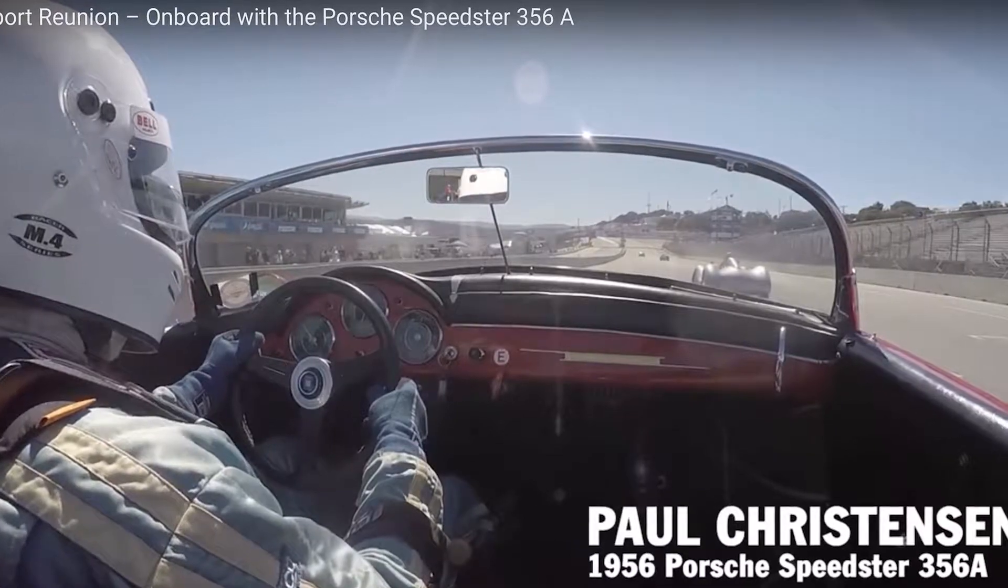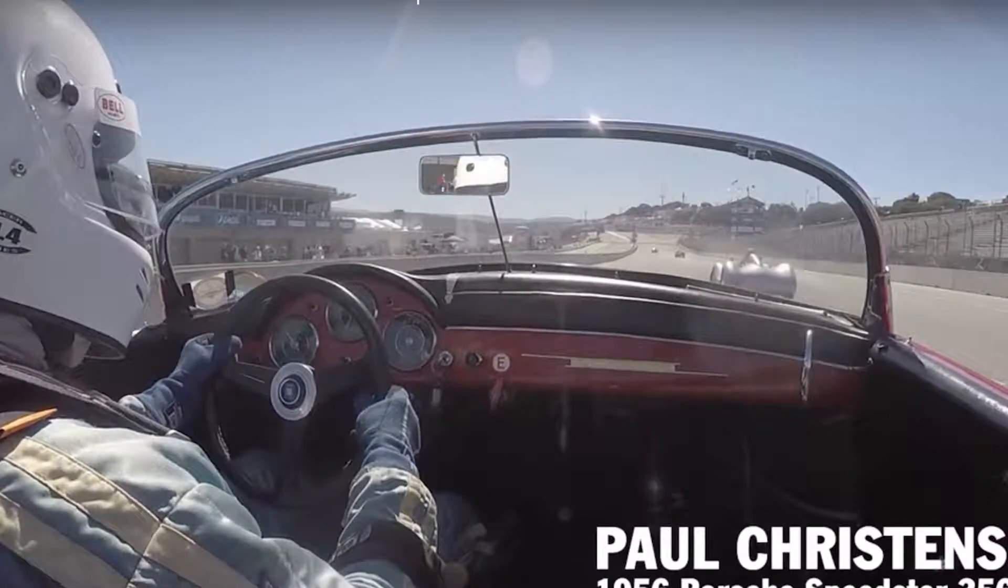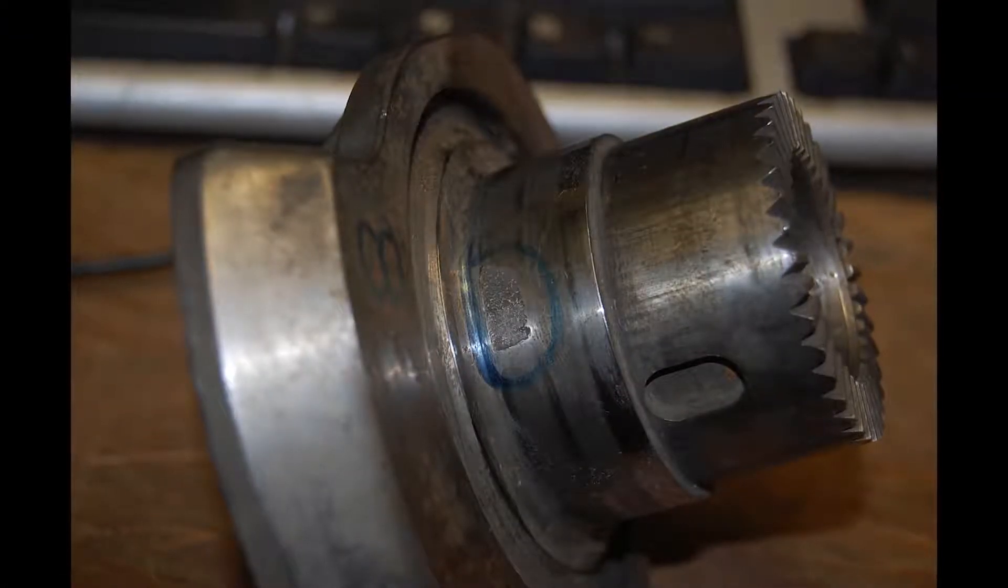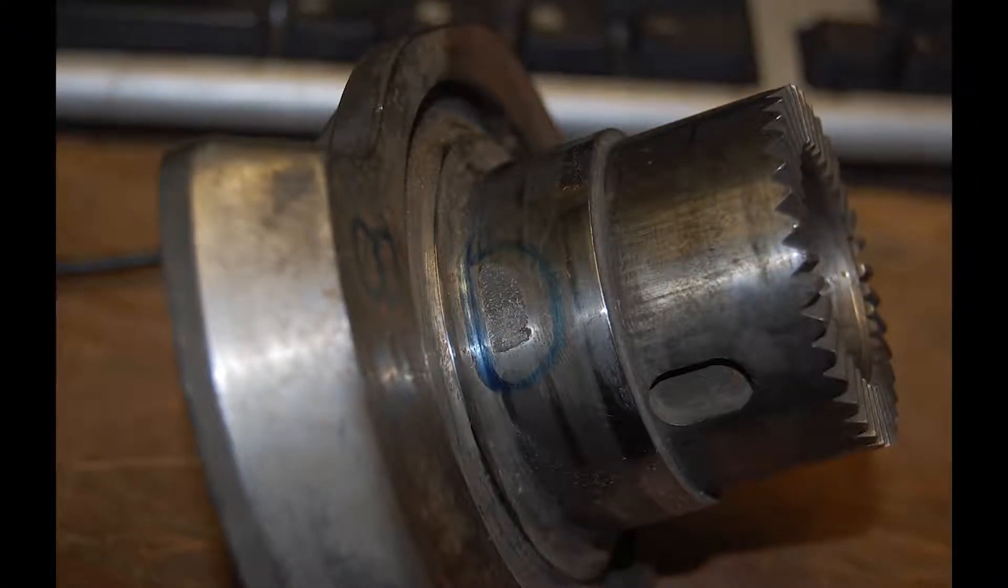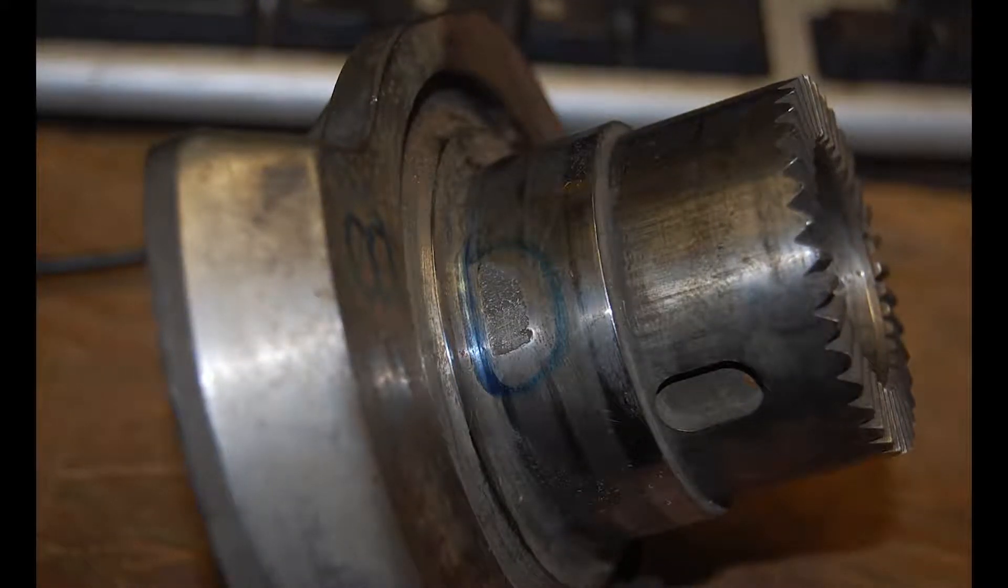As one might imagine, finding and maintaining all the various components for a car that has not been built for 50 years is no easy task. One example of these rare components is the roller bearing crankshaft found in this 356A Speedster. Over the years these wear out and become unusable.